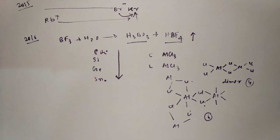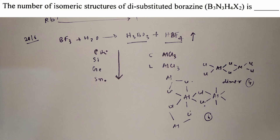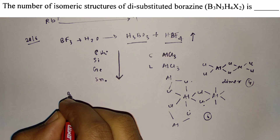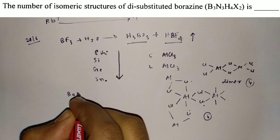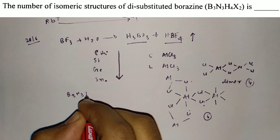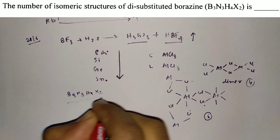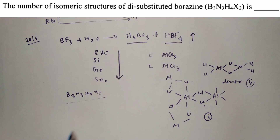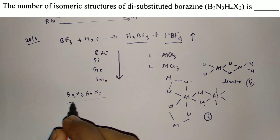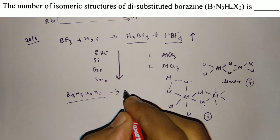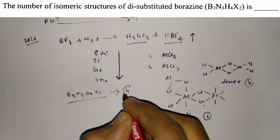Next, from JAM 2017, the question was: the number of isomeric structures of disubstituted borazine, that is B3N3H4X2. The number of isomeric structures is four.